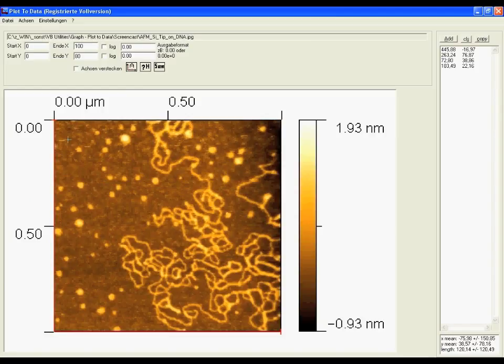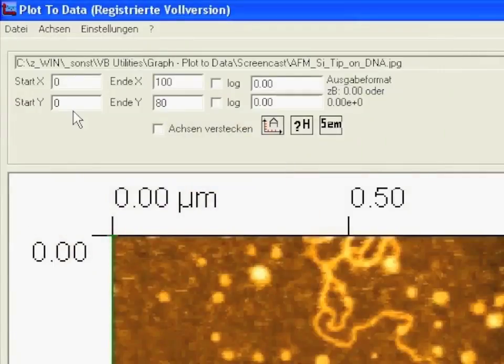The second step is to tell the program how large are these axis. So we know here this is one micrometer lateral and vertically also one micrometer. So we say start of the x-axis is zero and the end is 1000 nanometers and for y the same.